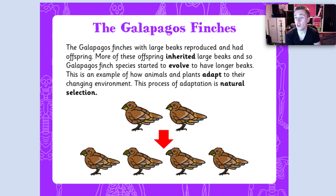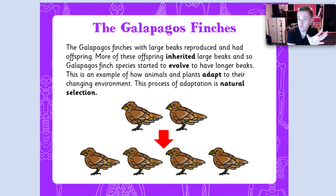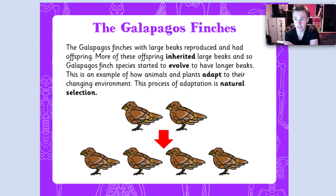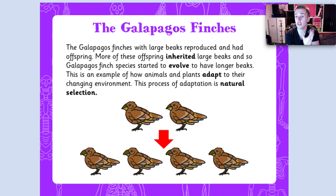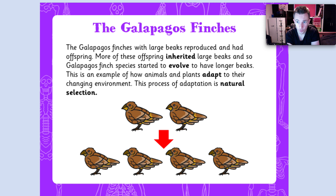The process where the ones that have the good stuff survive and the ones that have the bad stuff die is called natural selection — nature says you will survive because you have this advantage, and unfortunately you with the small beak, you don't.